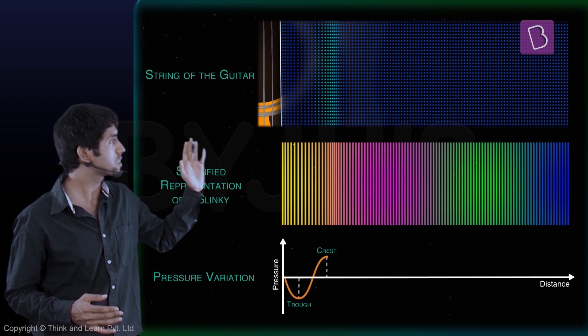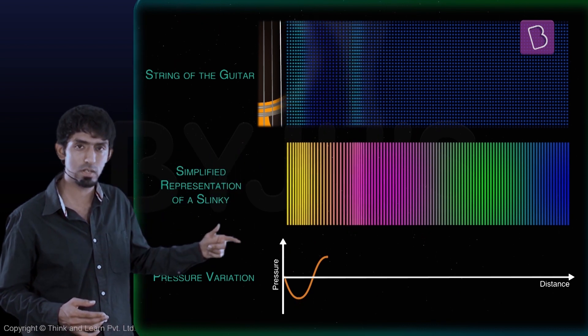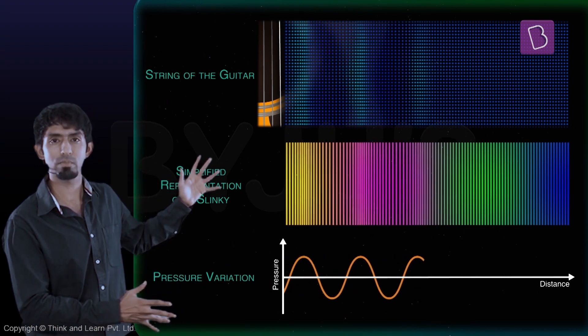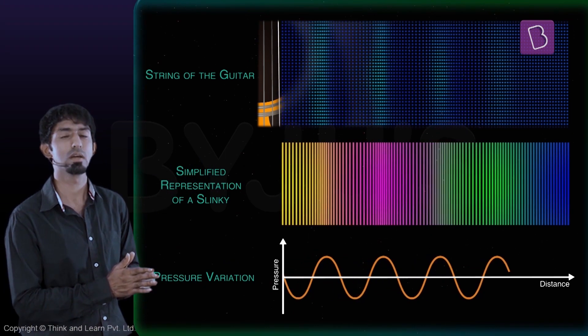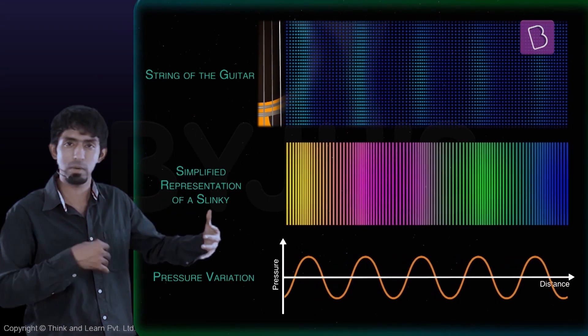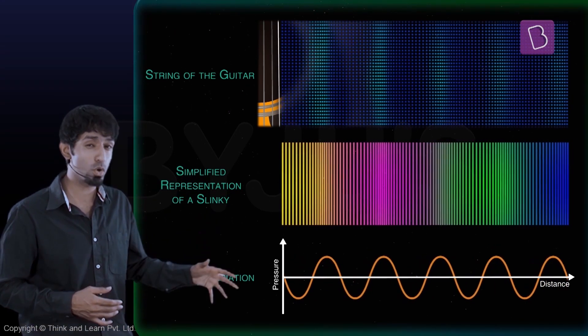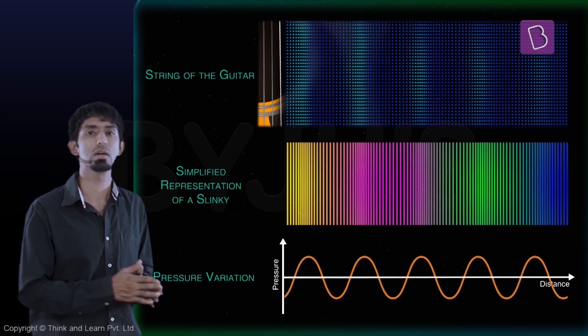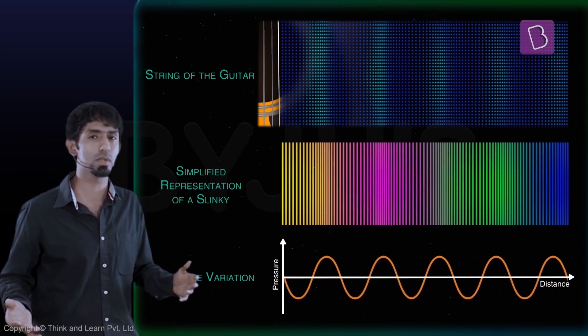Now what is going to happen is it's going to repeat again. So you're going to get the string to move forward again—one more compression, one more up. You would let this run through time and that's what you'll observe: the string compressing and rarefying the air, compressing, pushing it back, compressing, pushing it back, and so on with the slinky and the graph.